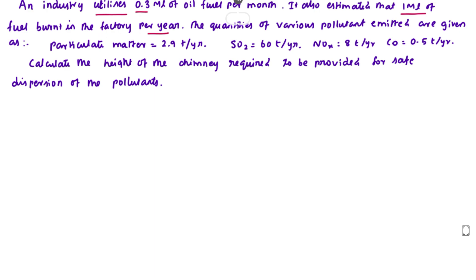The quantities of various pollutants emitted are given: particulate matter is emitted 2.9 ton per year, sulfur dioxide SO2 is 60 ton per year, NOx nitrous oxide is 8 ton per year, and carbon monoxide is 0.5 tons per year. Calculate the height of the chimney required to provide for safe dispersion of pollutants.